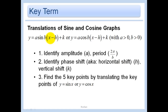Remember that when we do x minus h, that means we go h units right — we always undo all the x stuff. And then the vertical shift is just k, so that would be k units up. Step three is just find those five key points that we used in 14.1: zero, π/2, π, 3π/2, and 2π — just the five points on that unit circle.